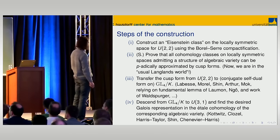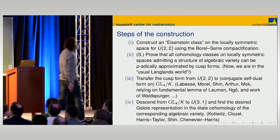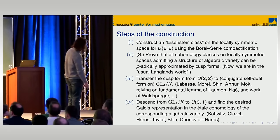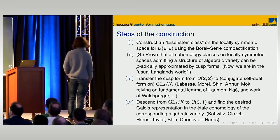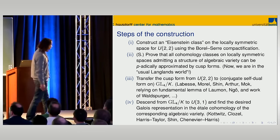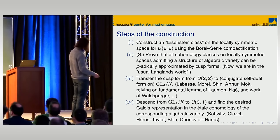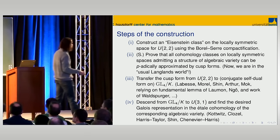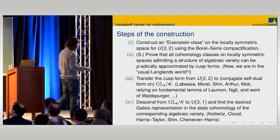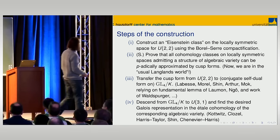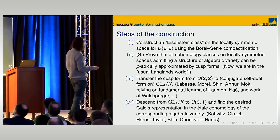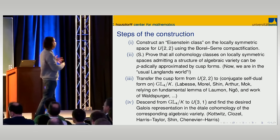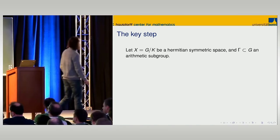After applying all these steps you end up with a Galois representation, but it's very indirect. Steps three and four were well understood for some time, even if all details were only recently written up. The key new step in the proof is step two: that you can always lift everything to cusp forms in this general setup.